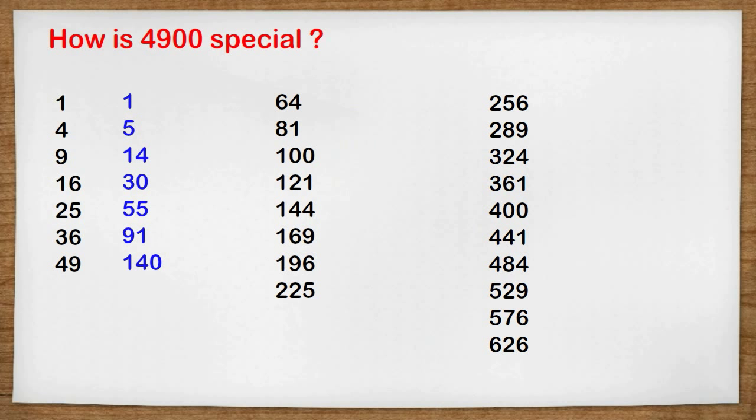Now the first total is 1, and we'll just ignore that. We go on to the next one. 1 plus 4 is 5. Then we have 14, 30, 55, 91, 140.